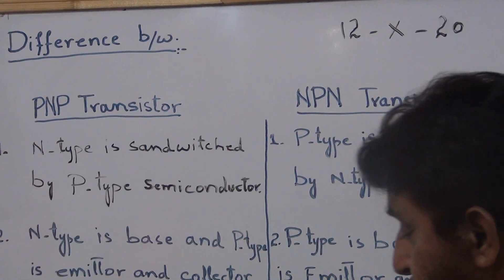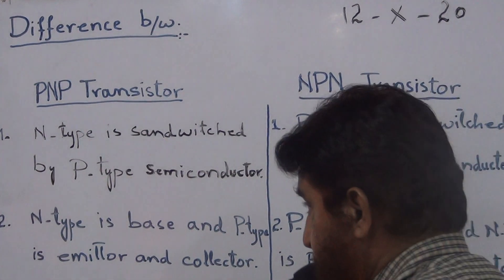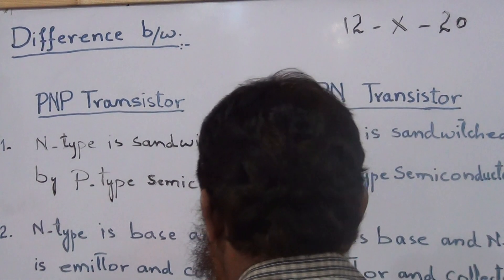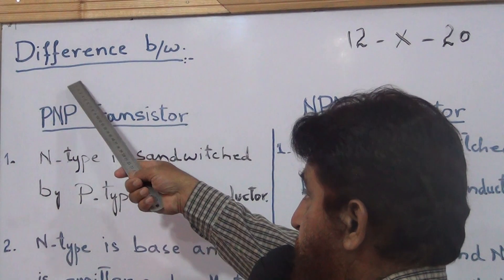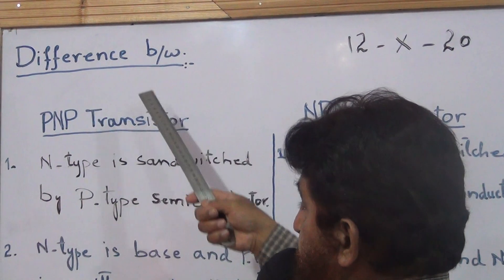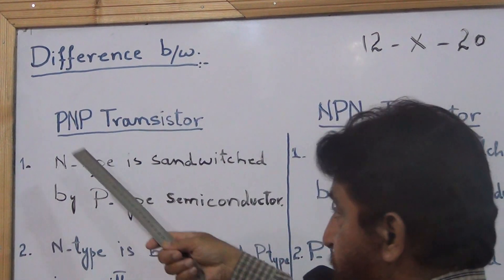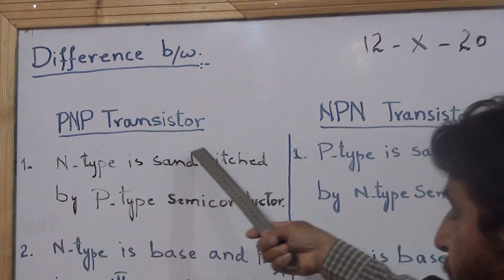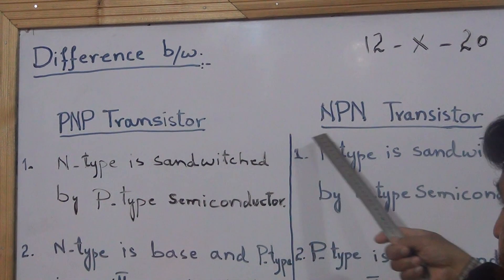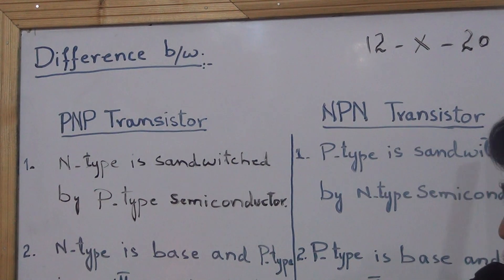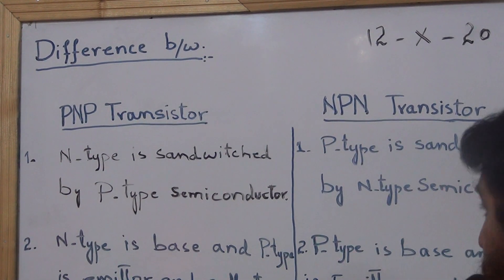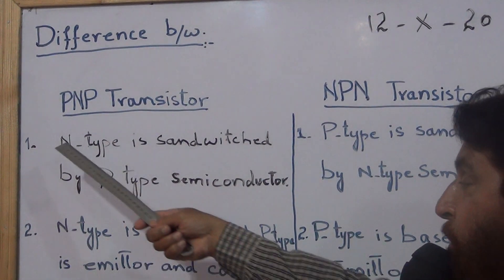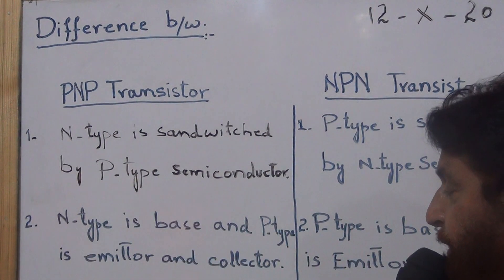You have studied about the transistor PNP and NPN. Now we can study about the difference. What is the difference between PNP transistor and NPN transistor? There are four differences.